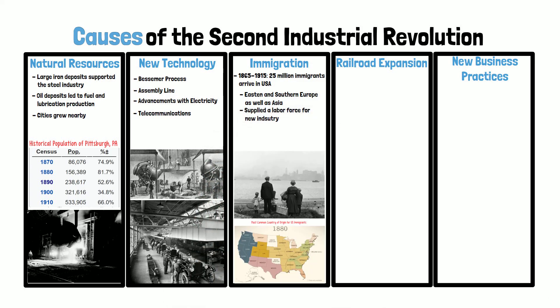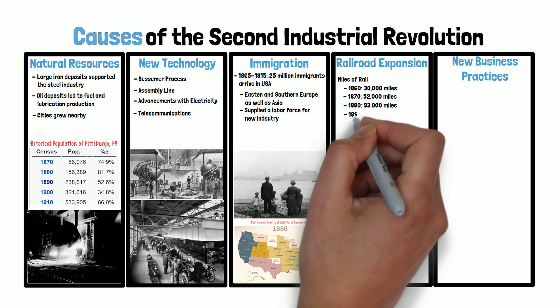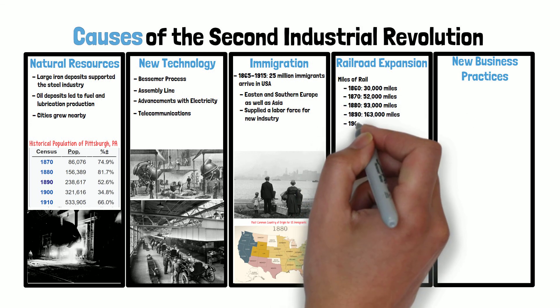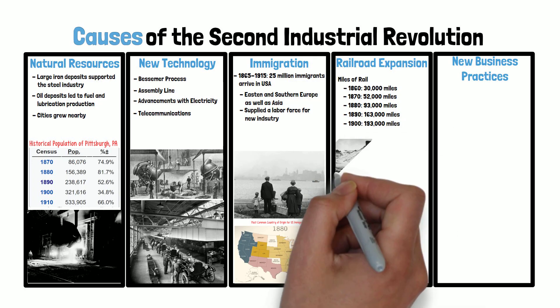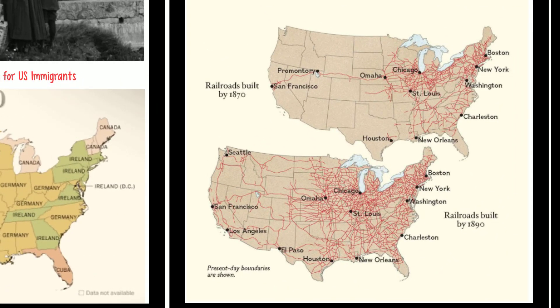With so many natural resources, improving technologies, and a growing labor force, America was also able to greatly expand its network of railroads. Railroads were essential to the Second Industrial Revolution because they connected resources to factories, transported goods, and allowed for the mass movement of people and products. America's rail system grew dramatically in the late 1800s and became the veins of American industrialization.